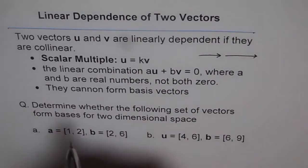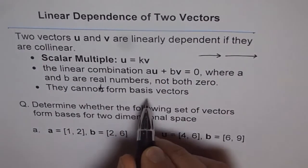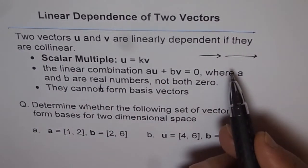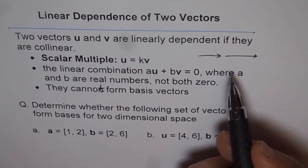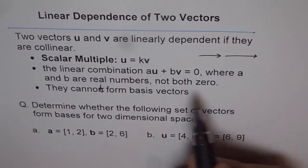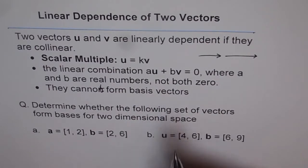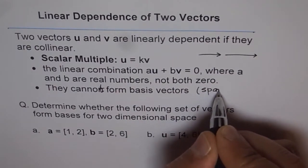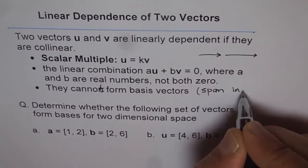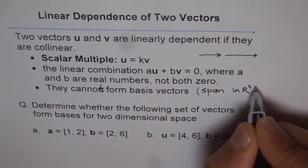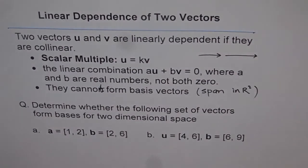Linearly dependent vectors cannot form basis vectors. Since linearly dependent vectors are collinear, they cannot form basis vectors or span R2. Remember: linearly dependent vectors are those which are collinear, and therefore they cannot form basis vectors and they cannot span R2.